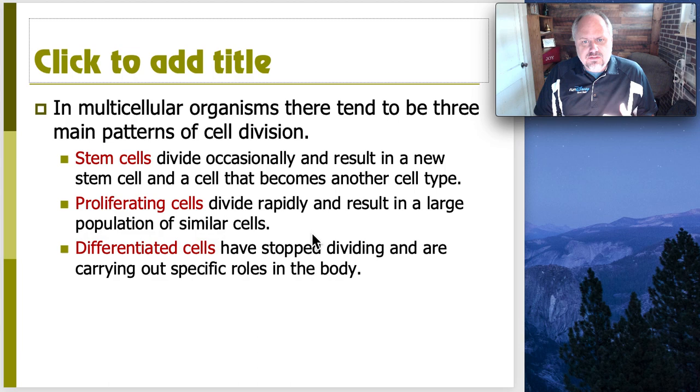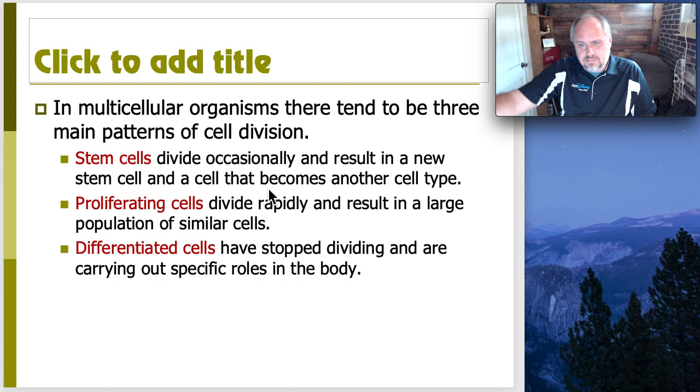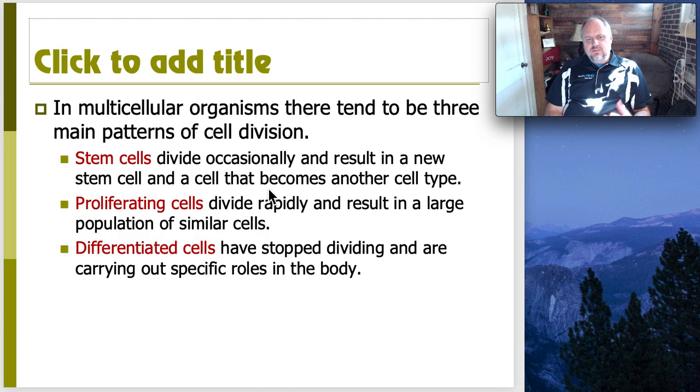When it comes to the ability to divide, our cells or the cells in our bodies tend to come in three different patterns. So stem cells are cells that generally are defined as when they divide, they replace themselves and they become a cell or make a cell that's going to become some other cell type. So a stem cell that you guys are probably familiar with would be the blood stem cells in our bone marrow. And so whenever one of those divides, then the stem cell gets replaced and one of the daughter cells becomes a white blood cell or a red blood cell as it differentiates.